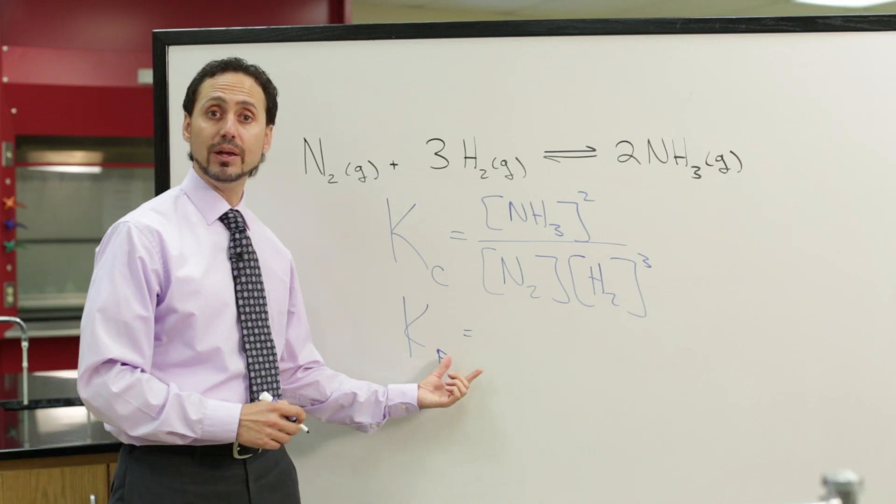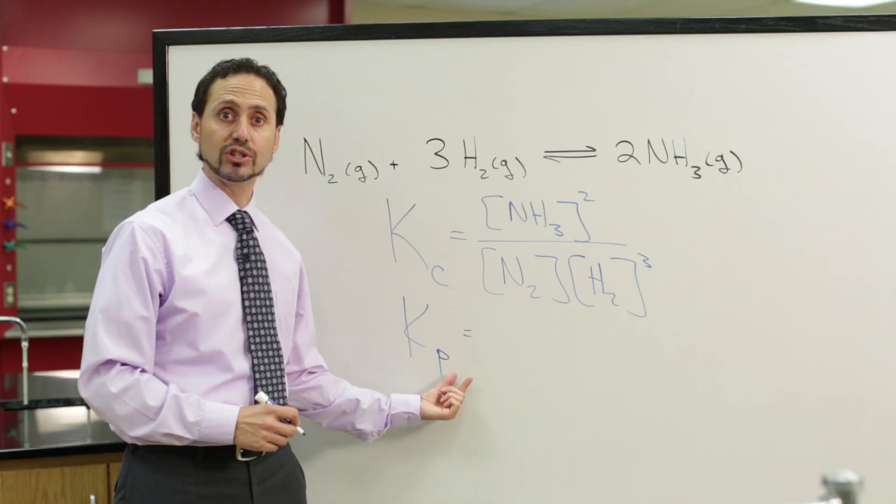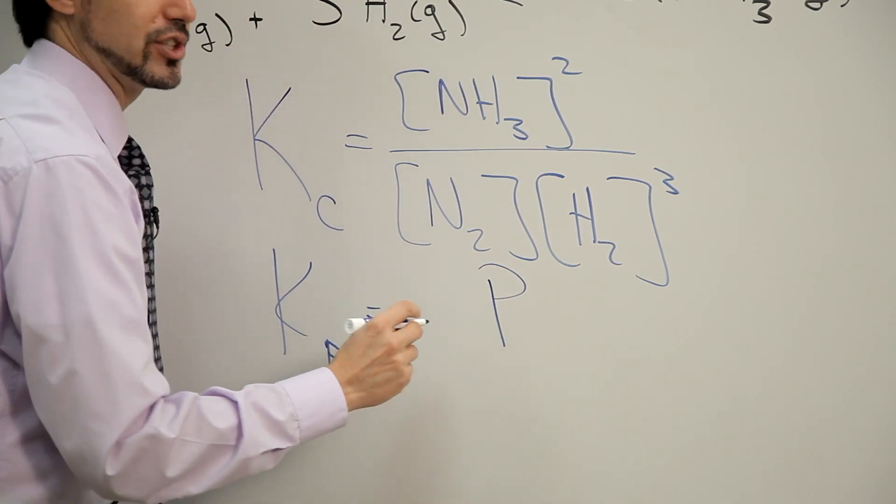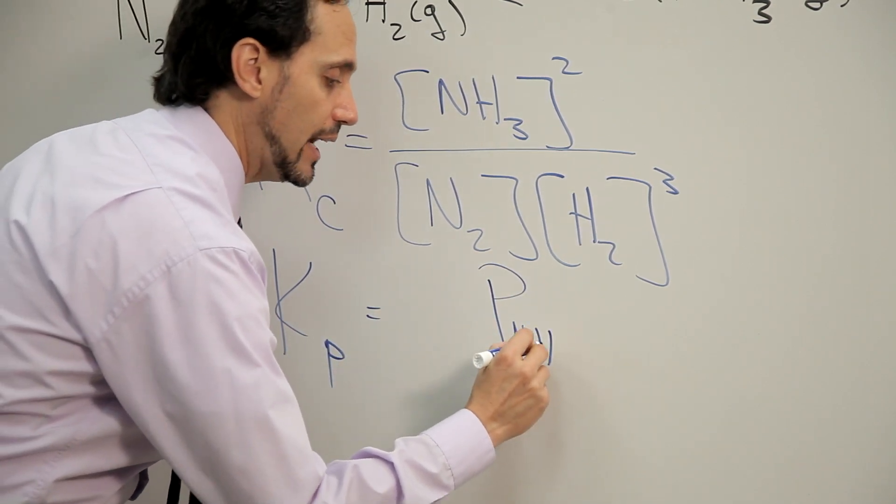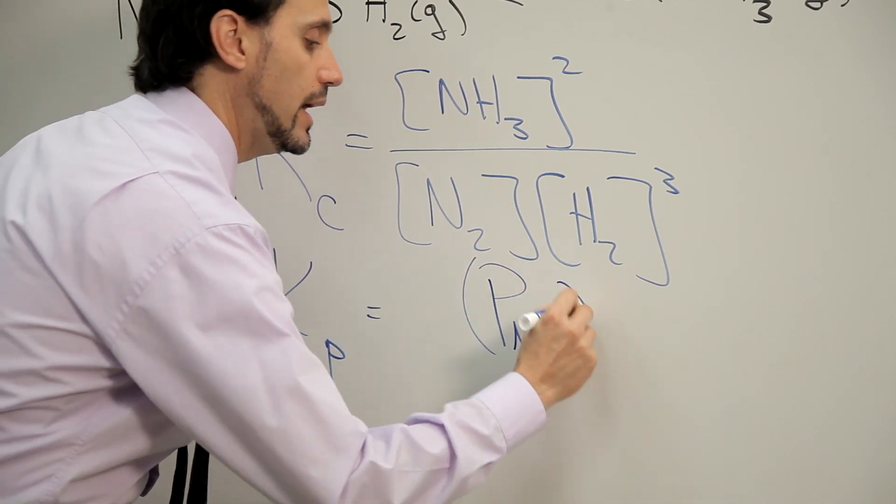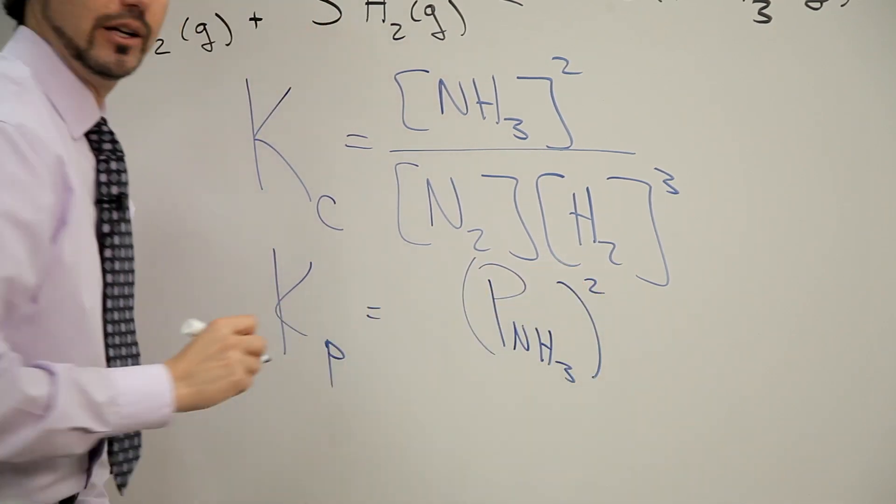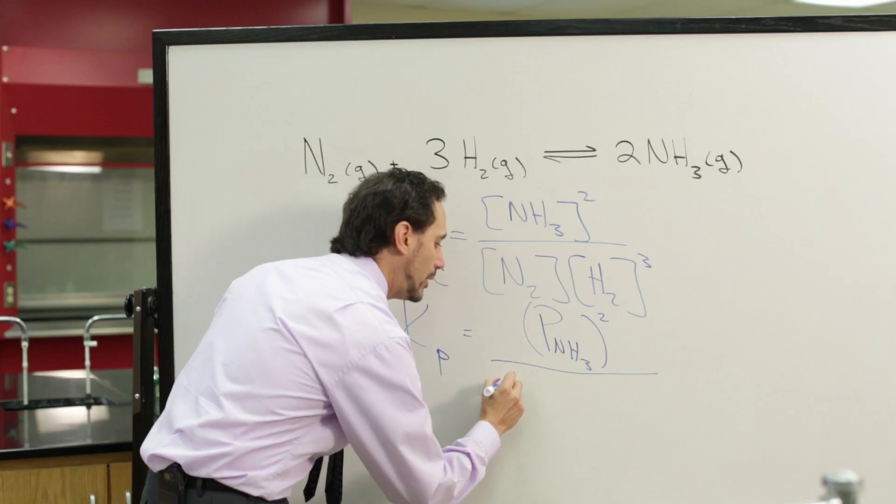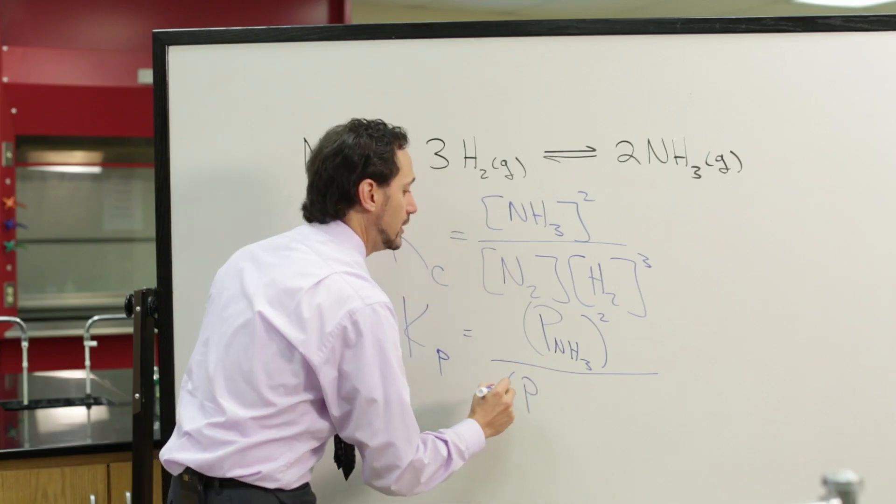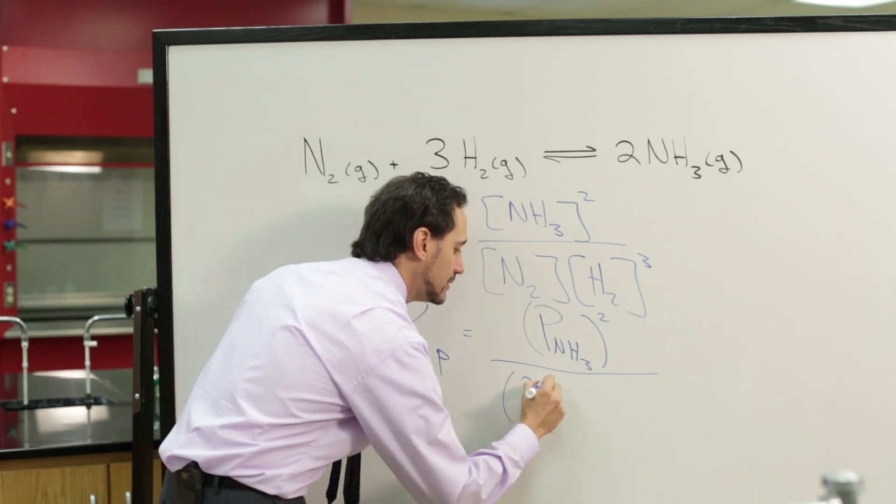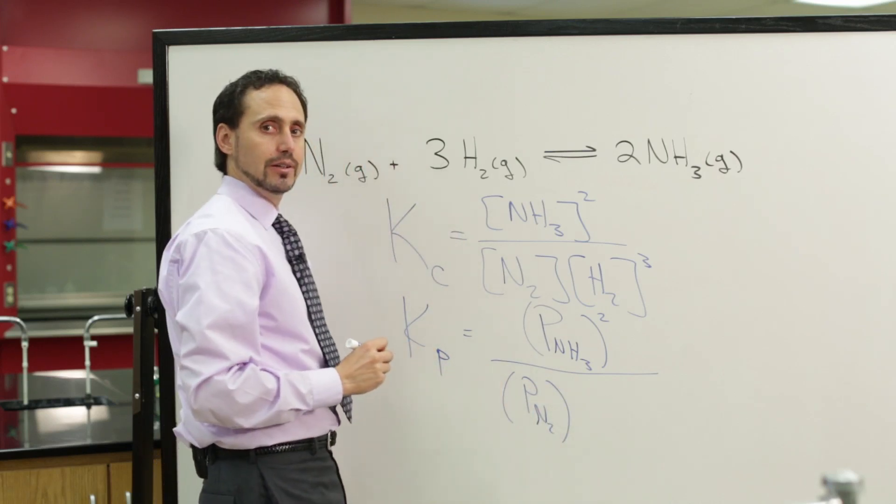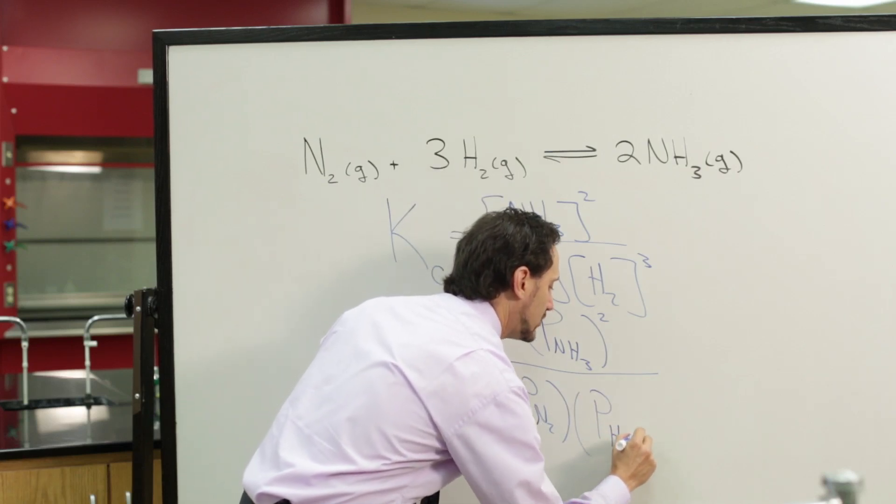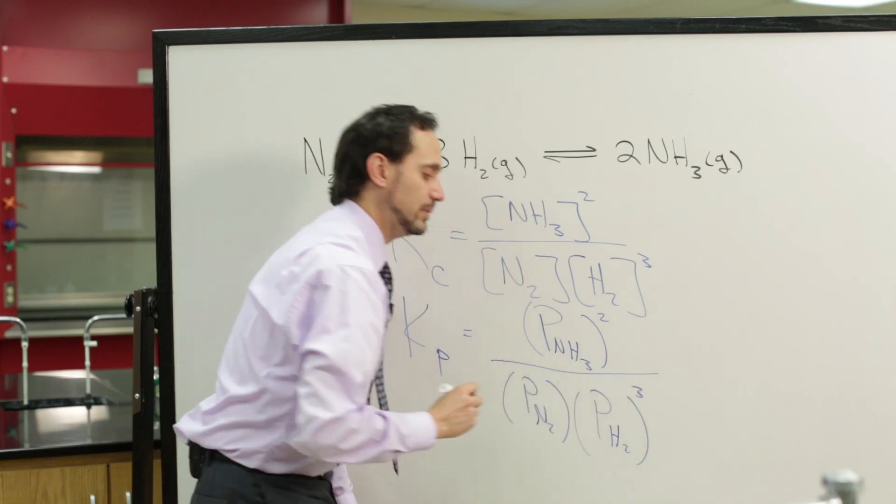So, what would a K sub P equilibrium constant expression look like? We would take the partial pressure of the ammonia gas, squared, on top. In the denominator, we would have the partial pressure of the nitrogen gas to the first power and the partial pressure of the hydrogen gas cubed.